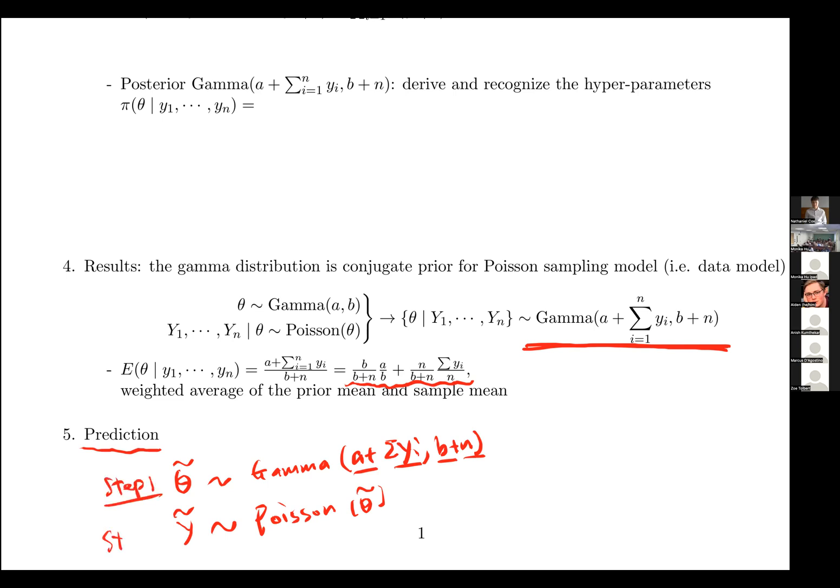I need to first of all generate a posterior draw of theta from its posterior distribution, which a, sum of y, b, and n are given to you. And then from there, so step one. And then step two, once I get my θ tilde from the posterior draw, I will be able to get a new draw of my y tilde, and don't forget it's about the Poisson.